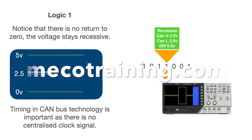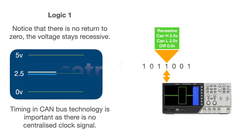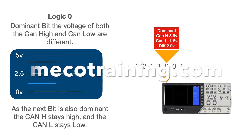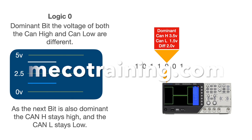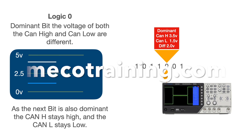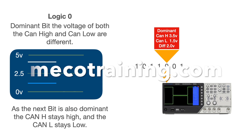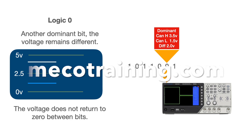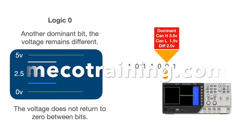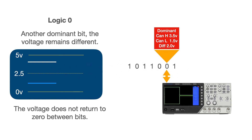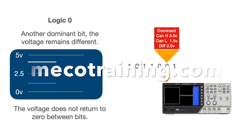Sooner or later the other devices may drift out of sync with the talking device. Remember there is no central clock, but also remember what happens each time the bus goes from a one to a zero: a logic zero places the bus in a dominant state with a high two-volt difference between the CAN High and Low wires, and this gives the other devices a reminder of the timing so they resynchronize. The next bit is also zero, and as this is a non-zero return system the voltage just remains the same. So the two dominant logic zeros are joined into one long electrical pulse, and the listening devices know this is two zeros — not just one — simply by the duration of the pulse.